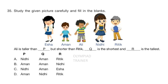Question 35: Study the given picture carefully and fill in the blanks. Ali is taller than P but shorter than Hrithik. Q is the shortest and R is the tallest. From the picture, the tallest is Nidhi and the shortest is Aman. The first blank — Ali is taller than Aman. So the answer is Aman, Nidhi — that is option B.